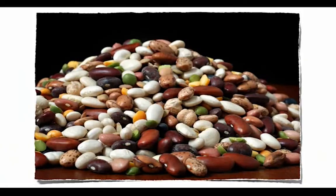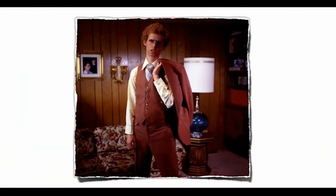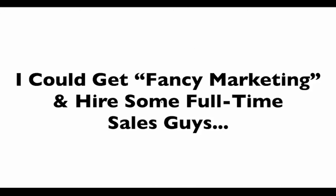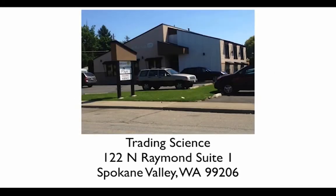Of course, this amounts to nothing if you don't take action on it. Here's my offer to coach 25 of you. We have two program options: $997 for six months access to these signals, or $2,997 for three years access — a 50% discount. With the three-year option you also get my additional Trading as a Business course (normally $2,000) and the Weekly Options Science course (normally $500) for free. Our office is Trading Science, 122 North Raymond Suite 1, Spokane Valley, Washington 99206.